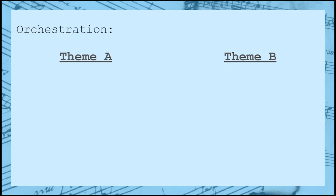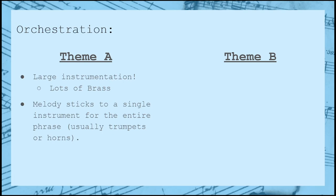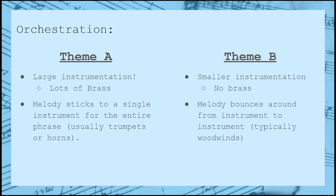The very last thing to address is orchestration, and this is pretty straightforward for the most part. Theme A will typically use very large instrumentation — woodwinds, strings, and plenty of brass. The melody will typically be played by a single instrument for the entire phrase, usually the trumpets or the horns. Theme B is a little more nuanced: the brass will typically drop out entirely, and the melody will bounce around to different woodwinds, with the strings offering support. Each theme will also use very different textures.